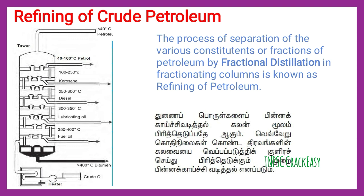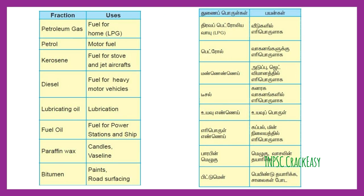This is very important — fractional distillation. The products are: petroleum gas, petrol, kerosene, diesel, lubricating oil, fuel oil, paraffin wax, and bitumen. We use petroleum gas, and LPG cylinders are also obtained.